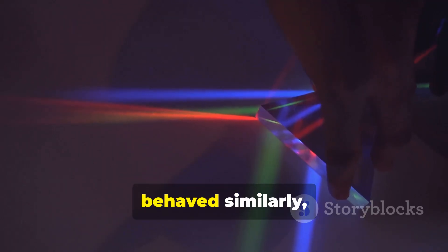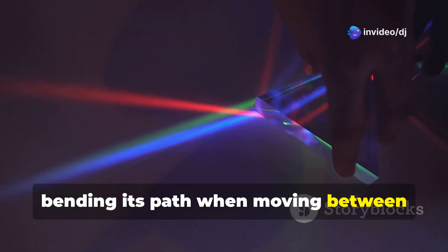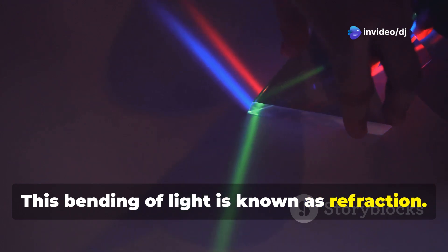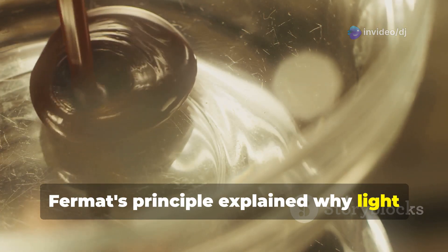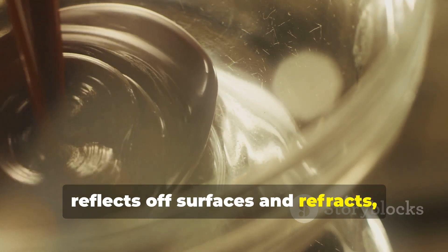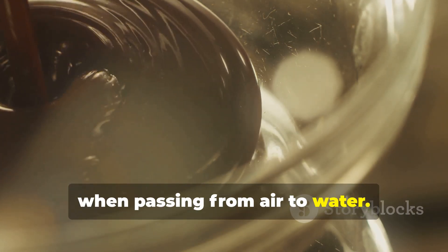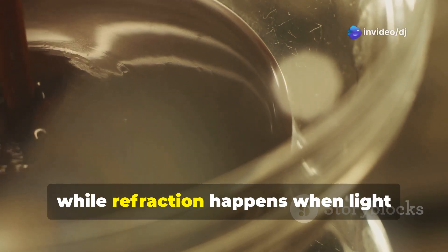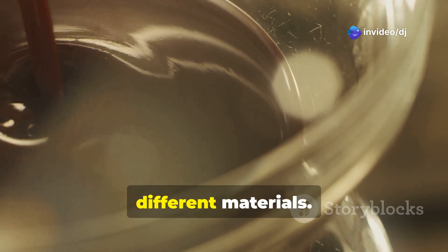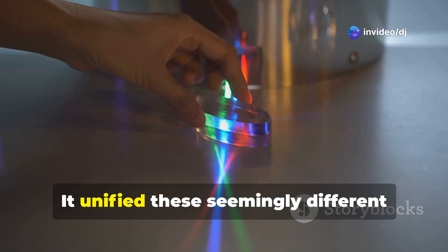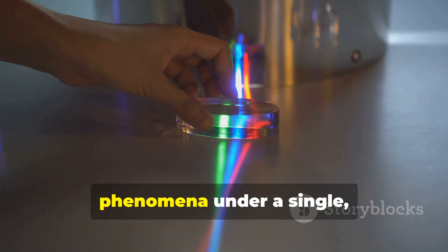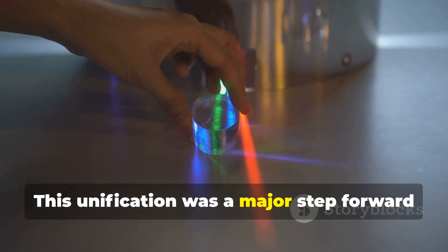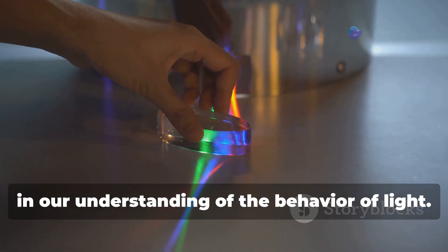Light, it seemed, behaved similarly, bending its path when moving between different mediums. This bending of light is known as refraction. Fermat's principle explained why light reflects off surfaces and refracts when passing from air to water. It unified these seemingly different phenomena under a single elegant principle. This unification was a major step forward in our understanding of the behavior of light.